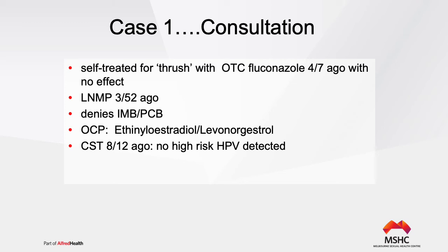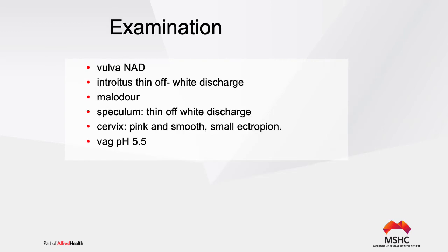Her last menstrual period was three weeks ago with no problems. She is on the oral contraceptive pill and doesn't miss pills. She had a normal cervical smear eight months ago and was told to repeat in five years. On examination: normal findings, no lymphadenopathy, vulva not red or inflamed. At the introitus there is a thin discharge with a smell; no thick adherent discharge on vaginal walls. The cervix is pink and smooth with a small ectropion, clear stringy mucus at the cervical os but no mucopurulent discharge, no contact bleeding, and vaginal pH is 5.5.